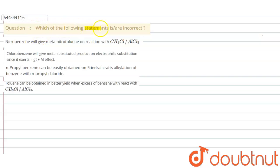Which of the following statements is/are incorrect? First, nitrobenzene will give meta-nitrotoluene on reaction with CH3Cl in presence of aluminum trichloride. Second, fluorobenzene will give meta-substituted product on electrophilic substitution since it exerts minus I greater than plus M effect.